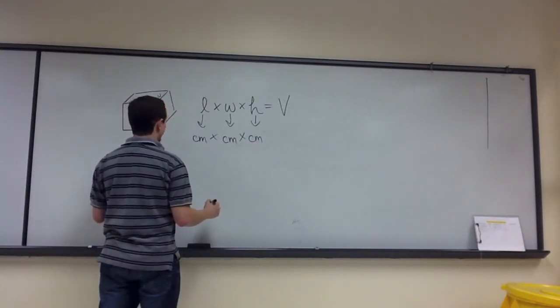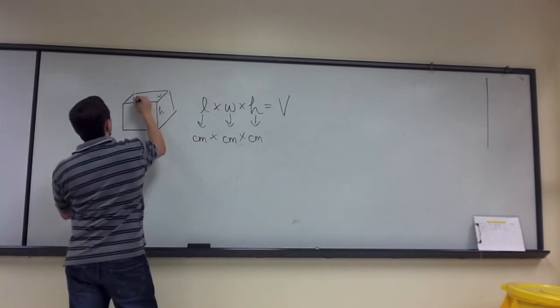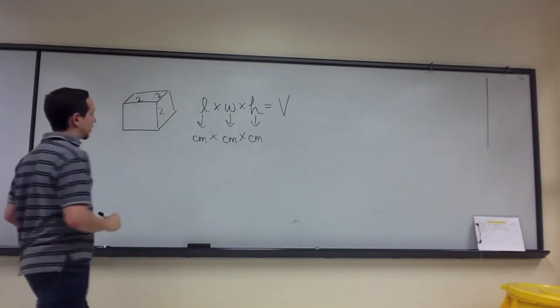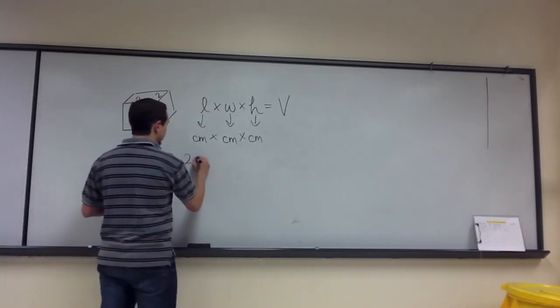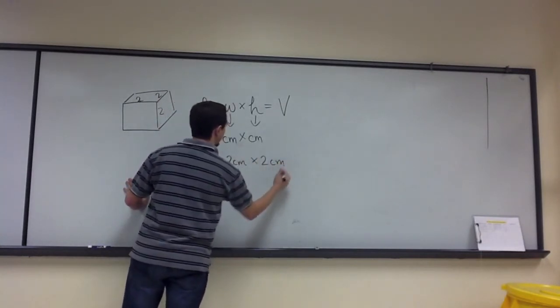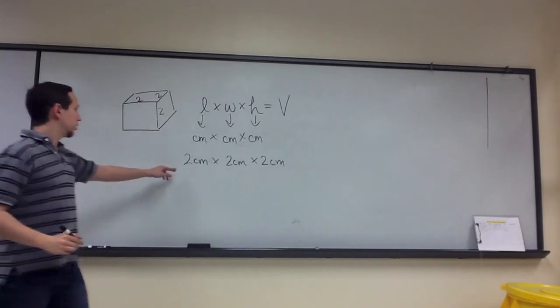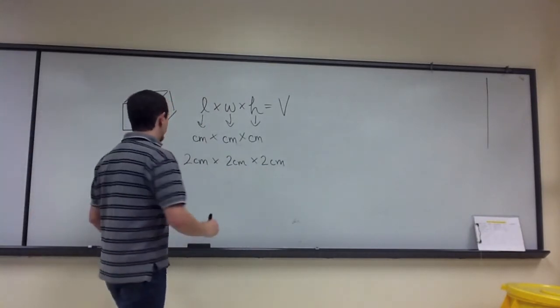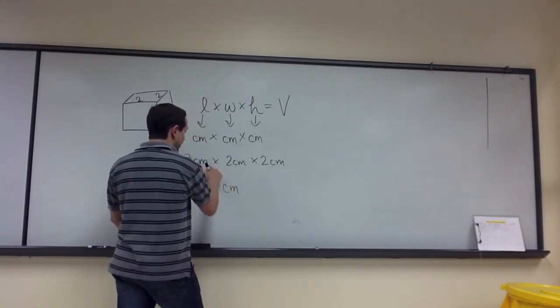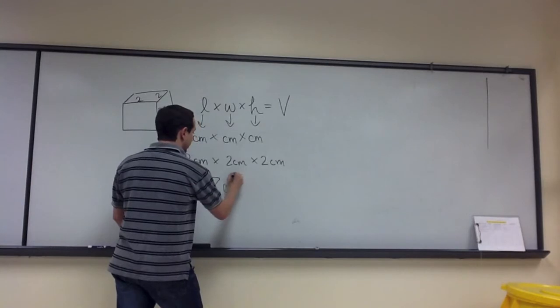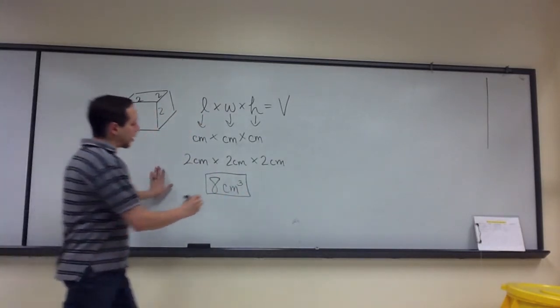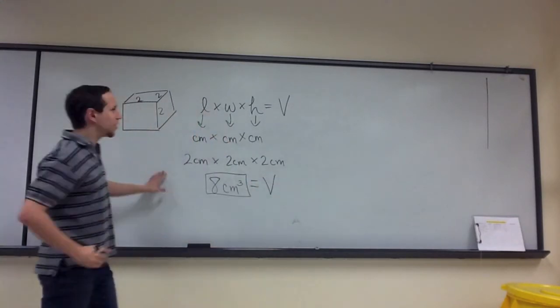So let's say this was two centimeters by two centimeters by two centimeters. So it gives us two cm by two centimeters by two centimeters, which then gives us two times two is four, times another two is eight. So that's eight, and the final unit is not centimeter, it's centimeter cubed. So eight centimeters cubed is equal to the volume of that cube.